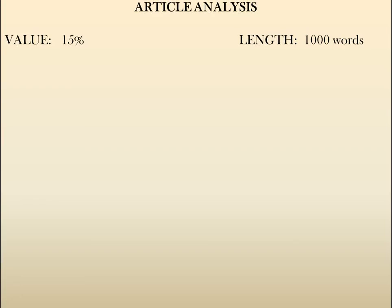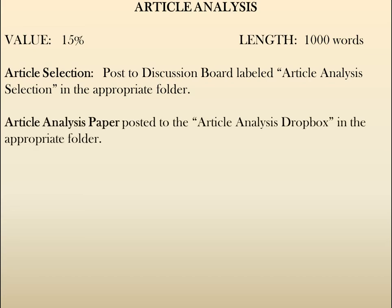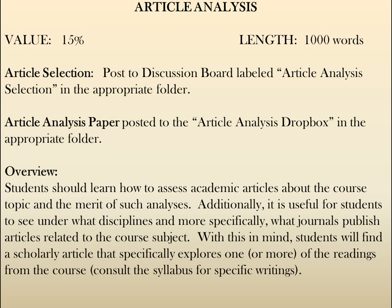Welcome to this video guideline on the article analysis essay you'll be writing in this course. It's worth 15% of your grade and will be a minimum of 1,000 words. There are two parts to this paper. The first part is the article selection — check the syllabus for when it's due and post it to the discussion board labeled 'article analysis' in the appropriate folder. The second part is the article analysis paper itself. The overview is that part of this course involves learning how to assess academic articles about the course topic and the merit of such analysis.